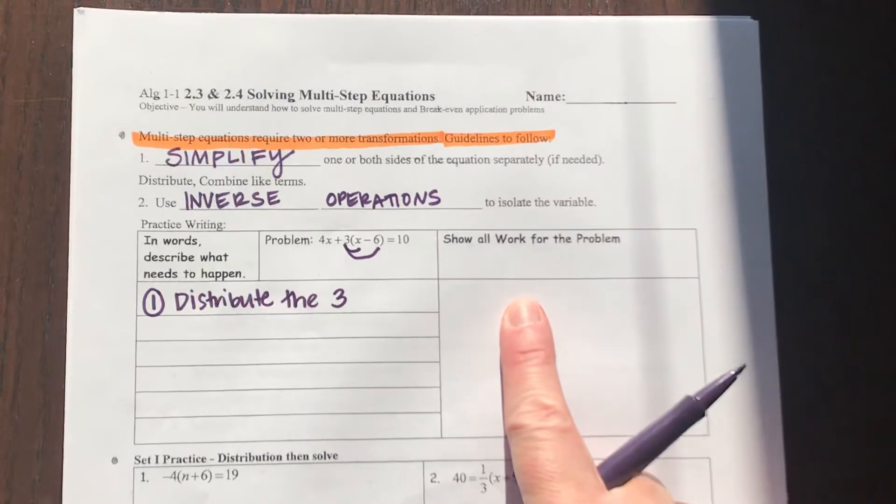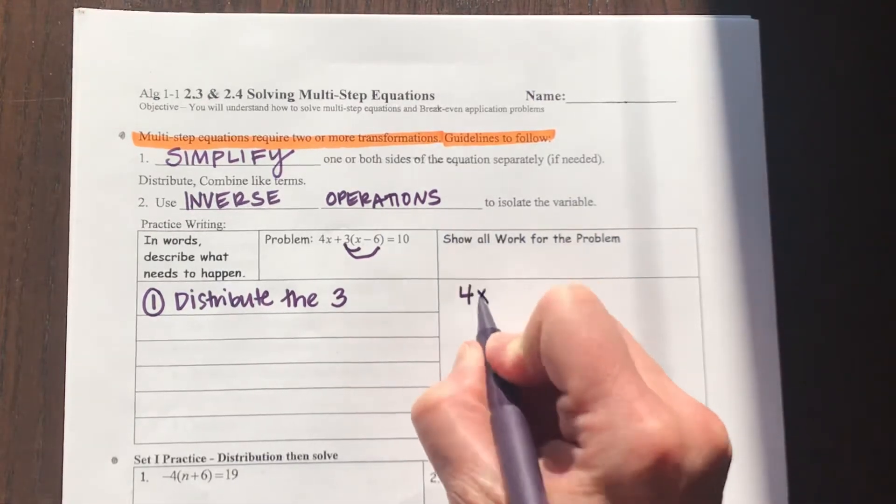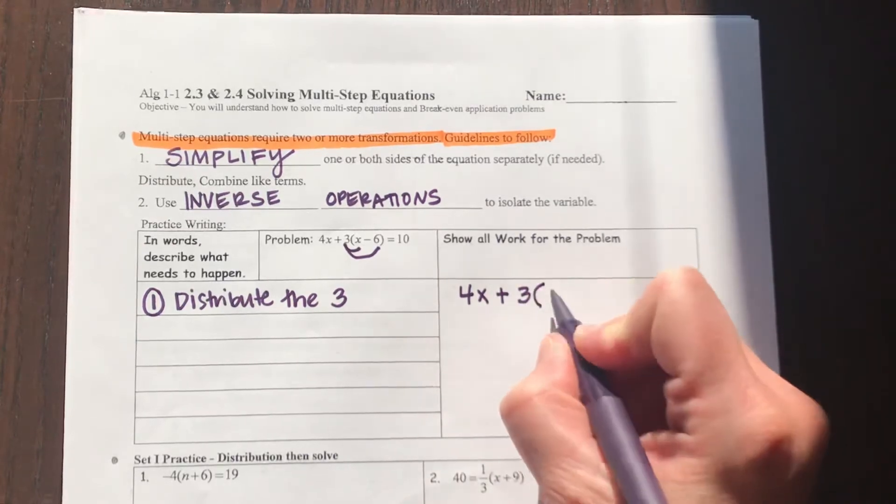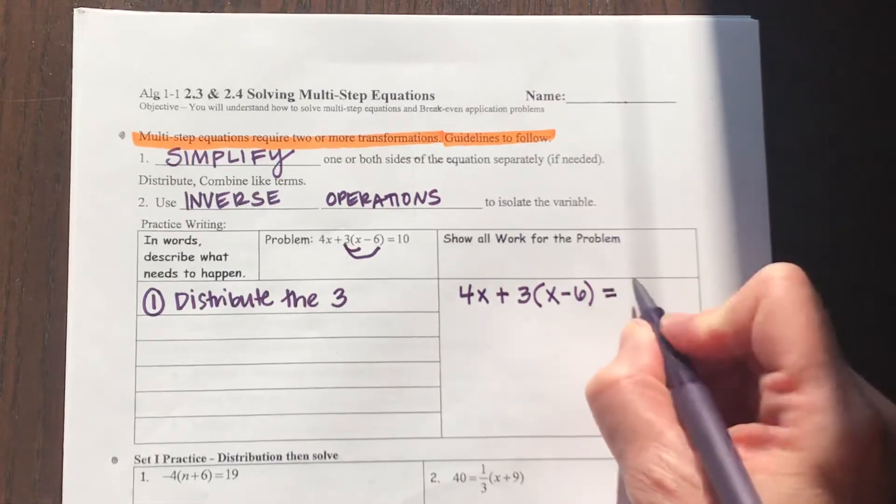If I start showing my work on how to distribute the three, my problem would now look like this. So if I have 4x plus 3 times the group, x minus 6, set equal to 10.